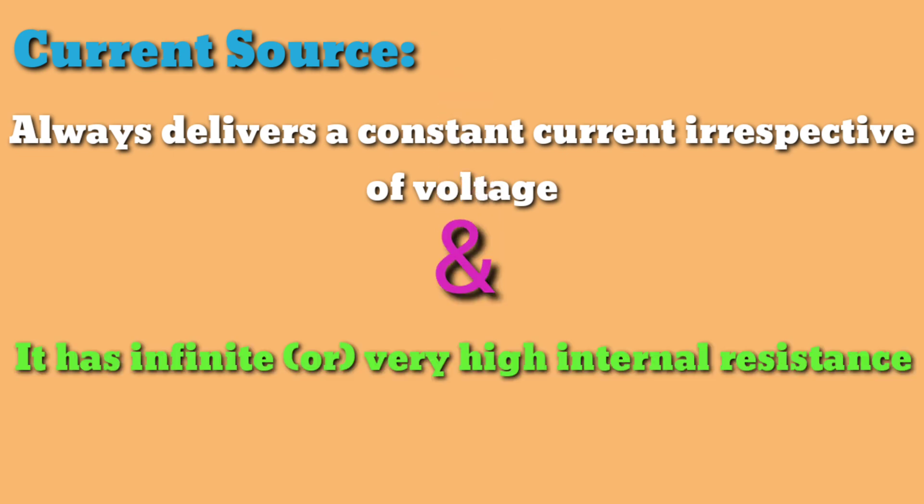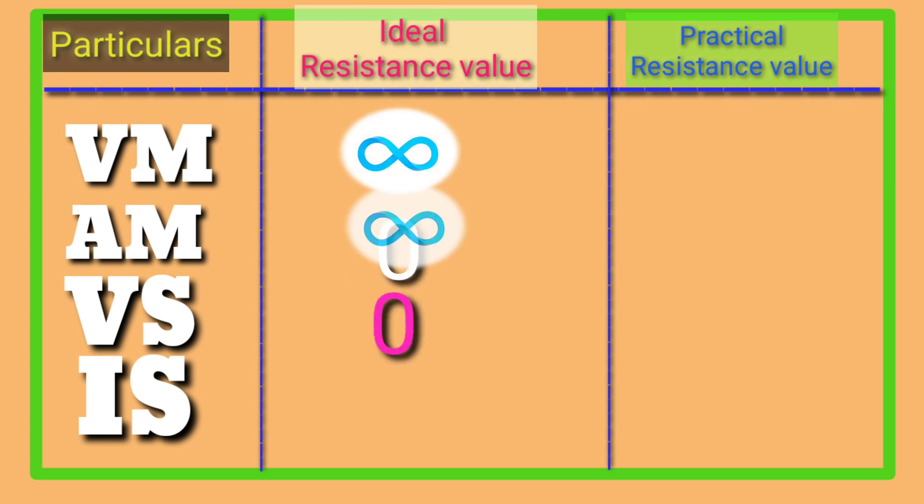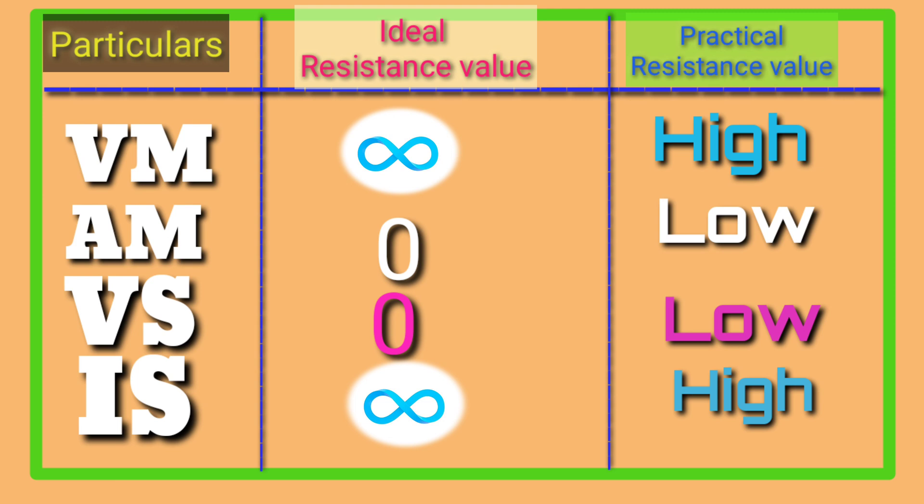From these two concepts, I created a table to remember easily. The particulars are ideal resistance value and practical resistance value: VM, AM, VS. The values are infinity, 0, 0, 0, infinity; high, low, low, high. In ideal condition we say infinity or 0, whereas in practical we say high or low.